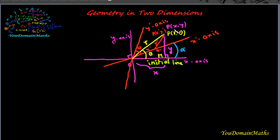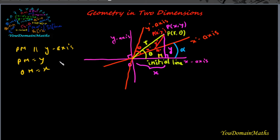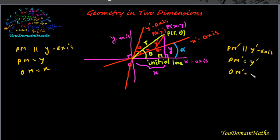If this point is defined by P(x, y) for rectangular axes, then draw PM parallel to the y-axis, so PM equals y and OM equals x. Also, if point P is denoted by P(x', y') for oblique axes, then draw PM' parallel to the y' axis, giving PM' equals y' and OM' equals x'.